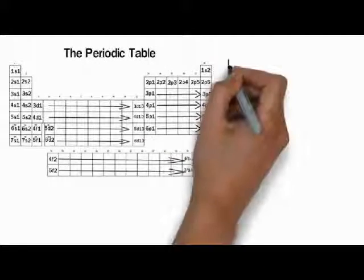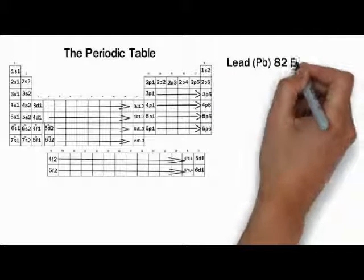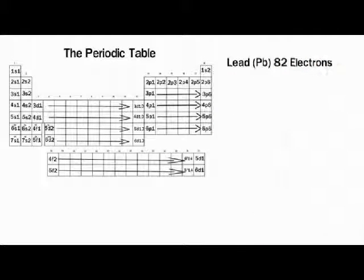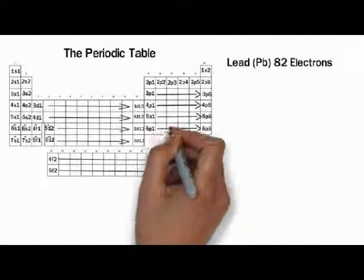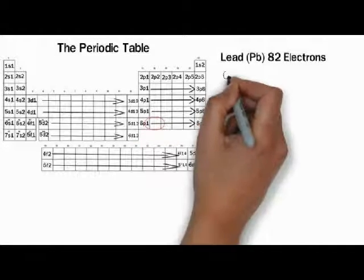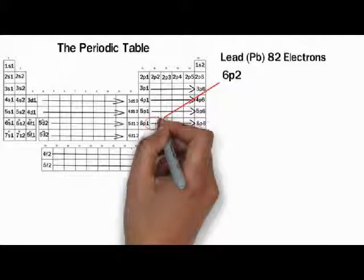This is the basic pattern in the periodic table, and this allows you to predict or figure out the last term of any element on the periodic table. So let's take lead for example.